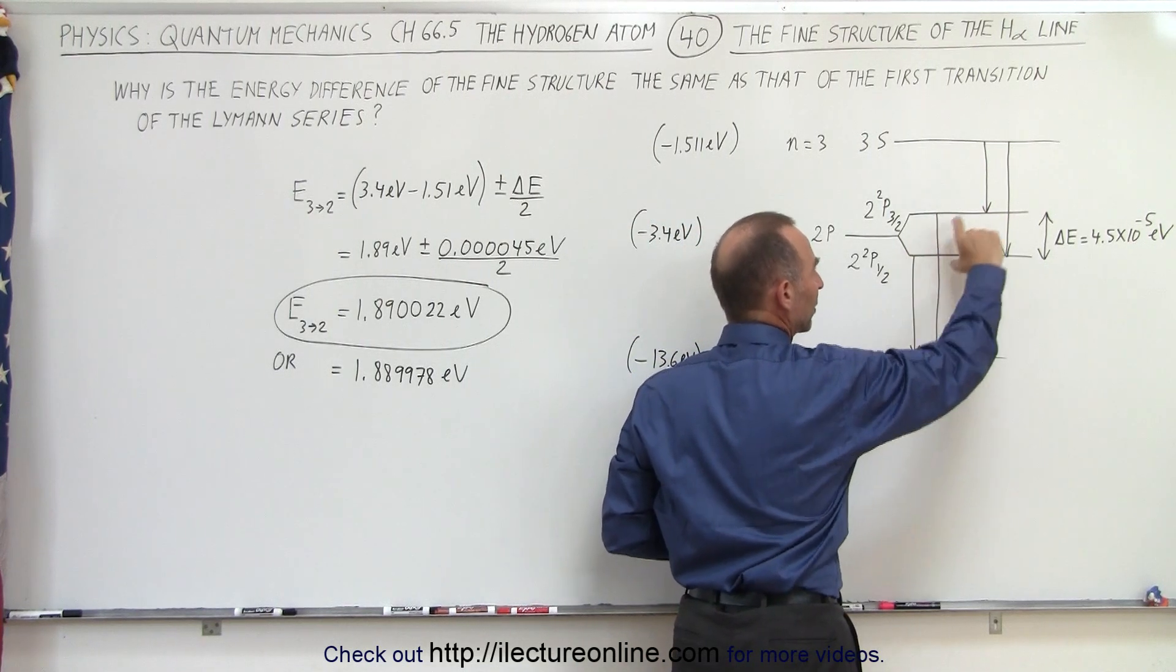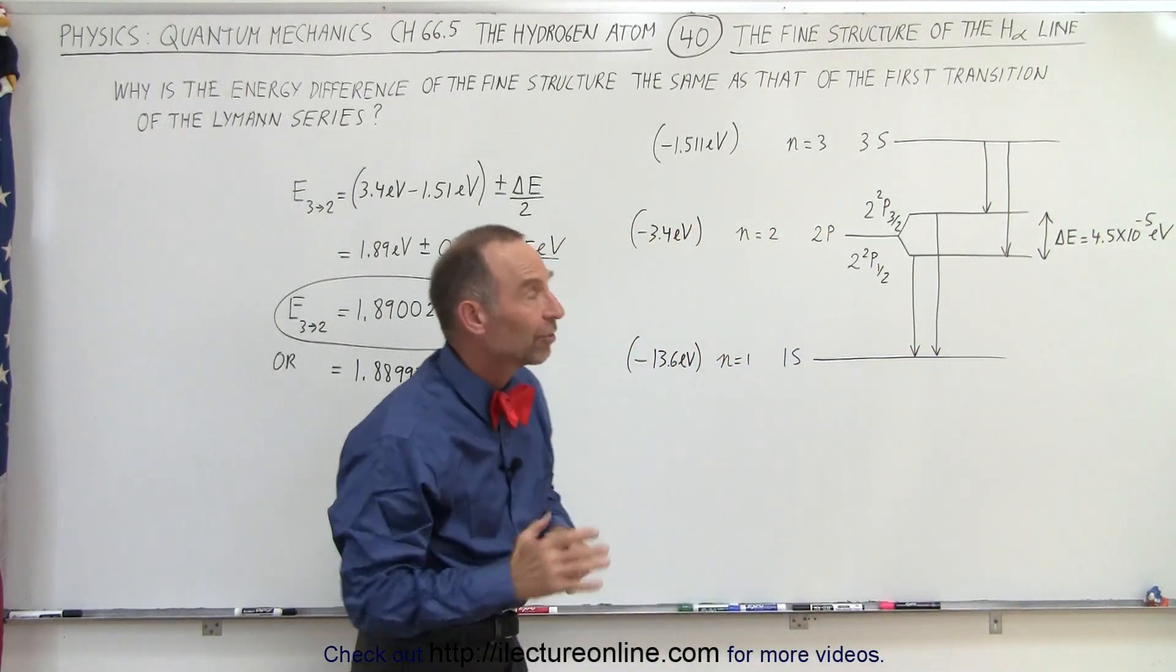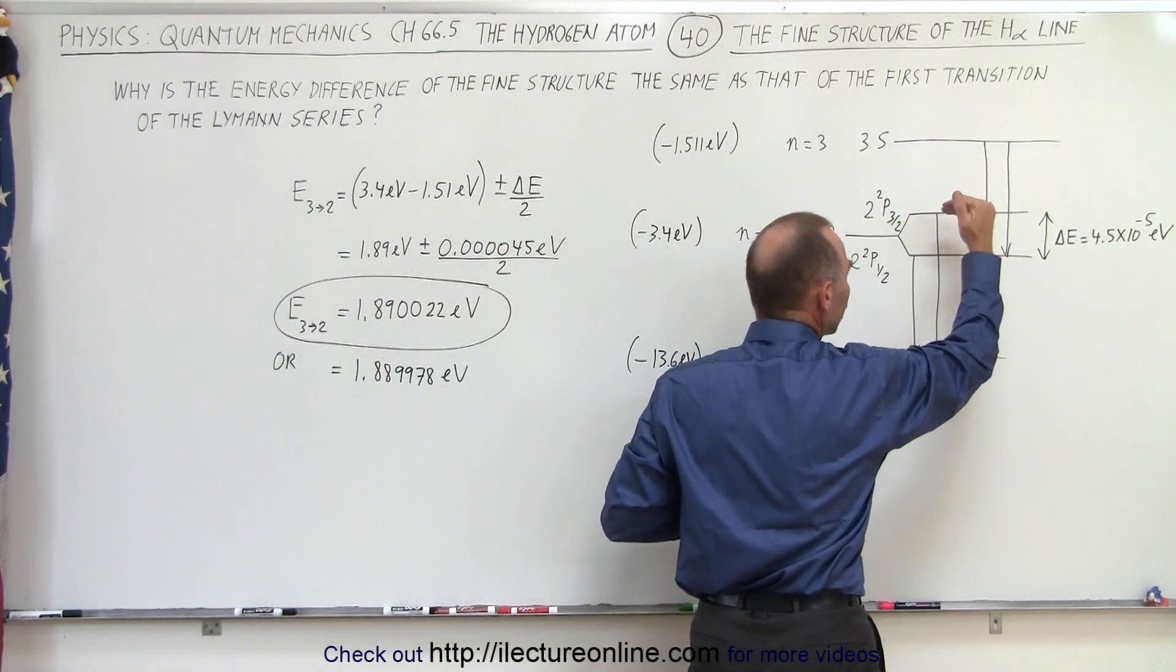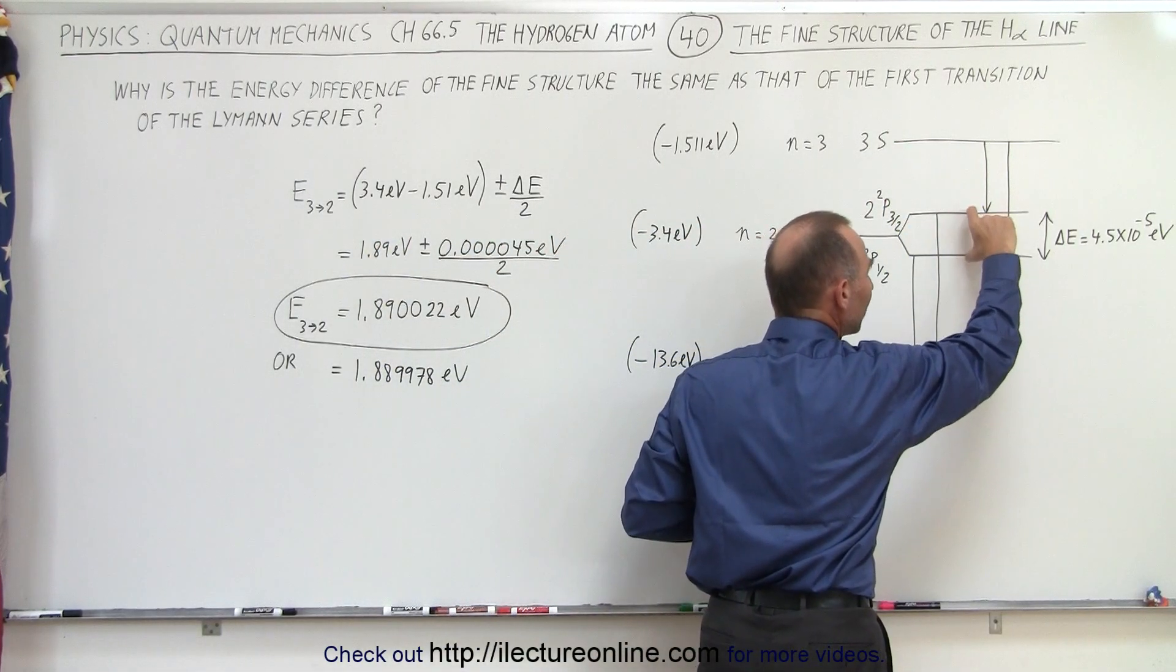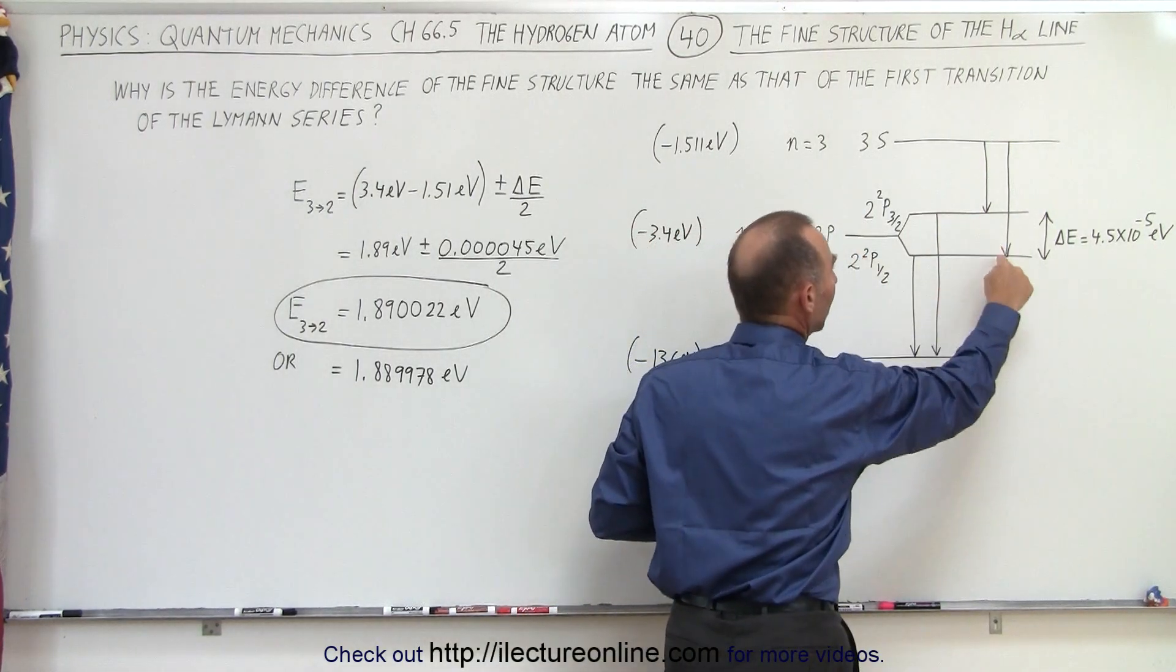It can start from here from here with an energy difference equal to 4.5 times 10 to minus 5 electron volts. But when the electron jumps from the third level down to the second level into the p orbitals there's a difference in the energy when it arrives. It can either arrive here or it can arrive here.